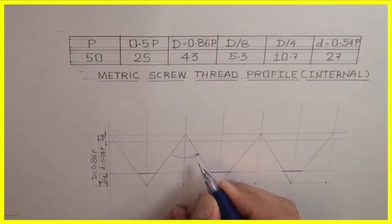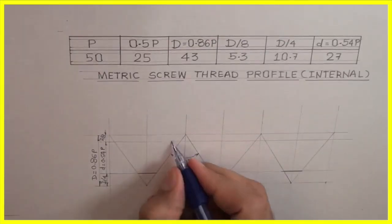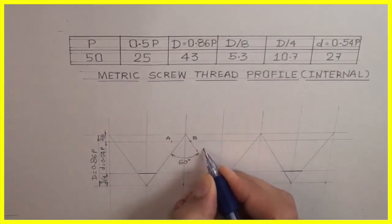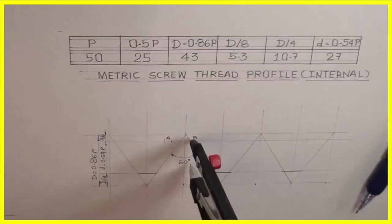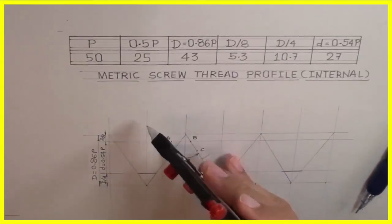We will mark the angle which is 60 degrees. We can bisect angle ABC. See, this is ABC. We have to bisect this angle, so we will bisect this angle wherever it will meet with that vertical line.